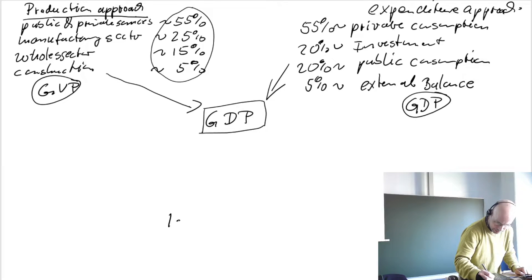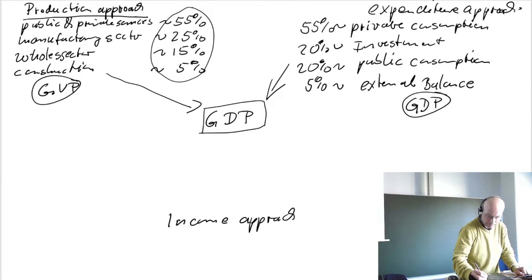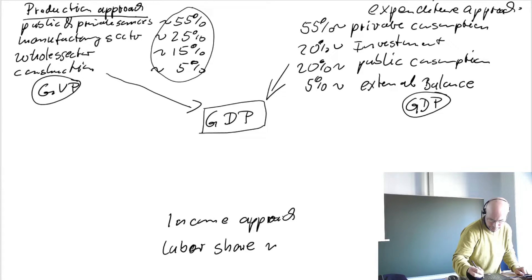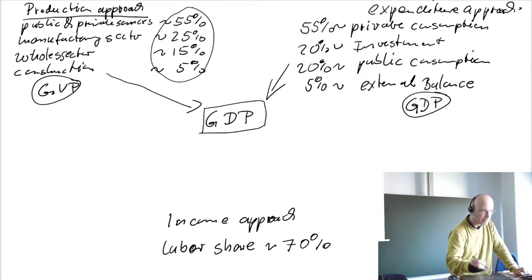Then we have the income approach, where we have the labor share with roughly 70%. This number was not quite calculated with respect to gross domestic product but with respect to national income, and then from national income we come to GDP via gross value added.